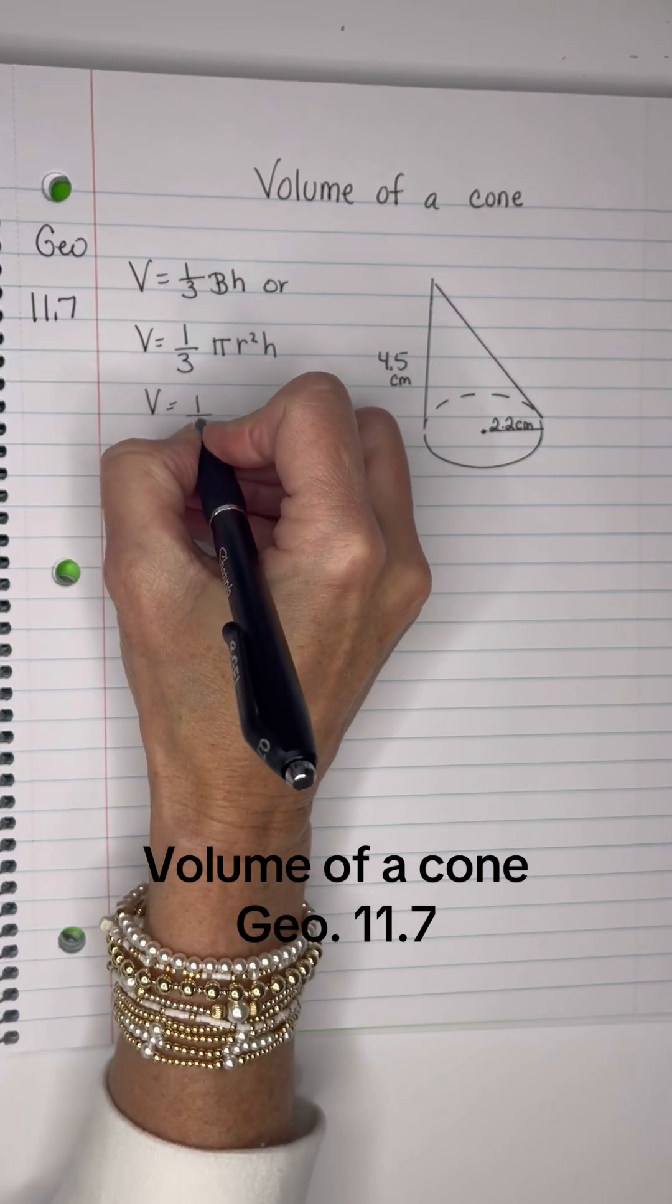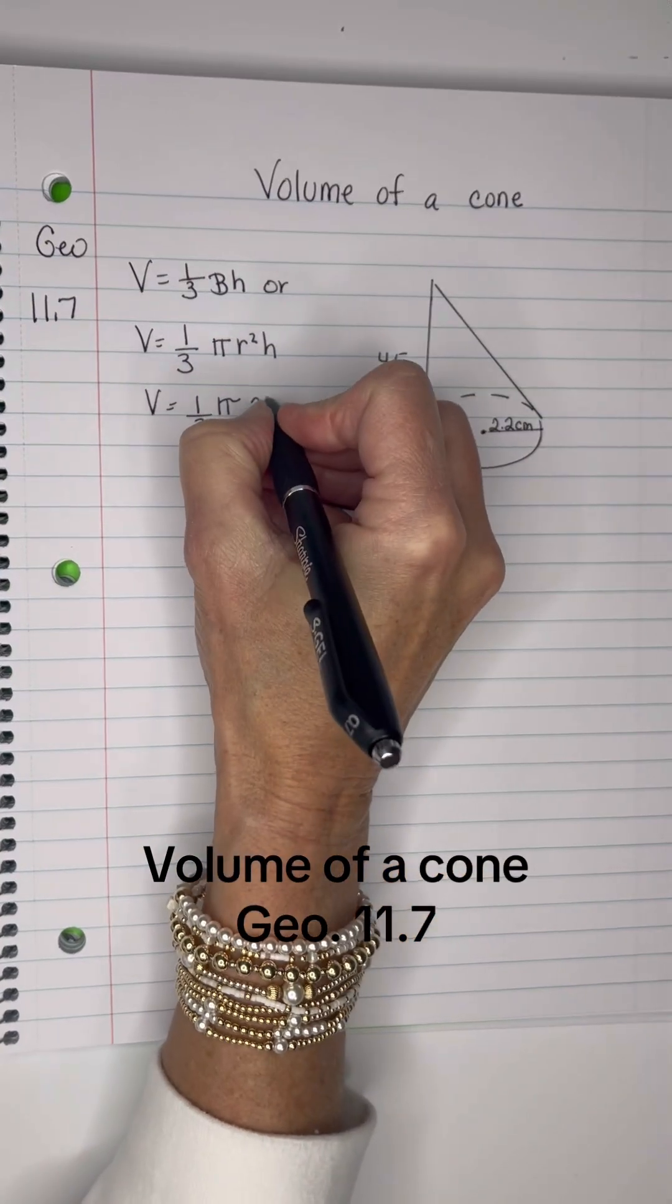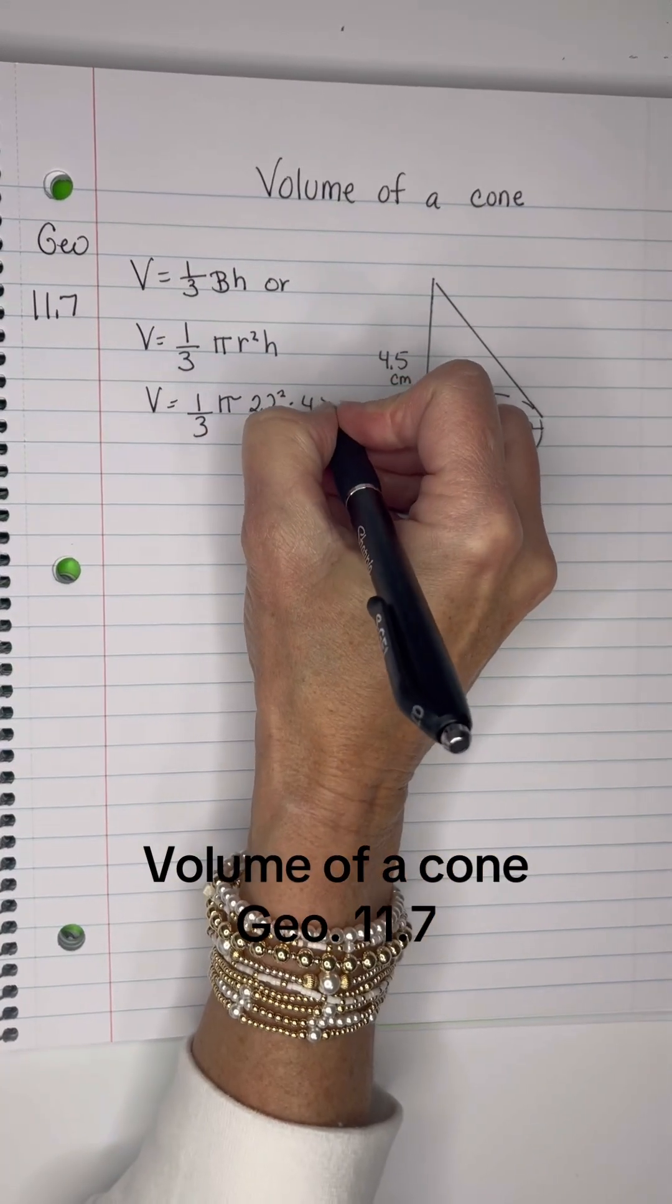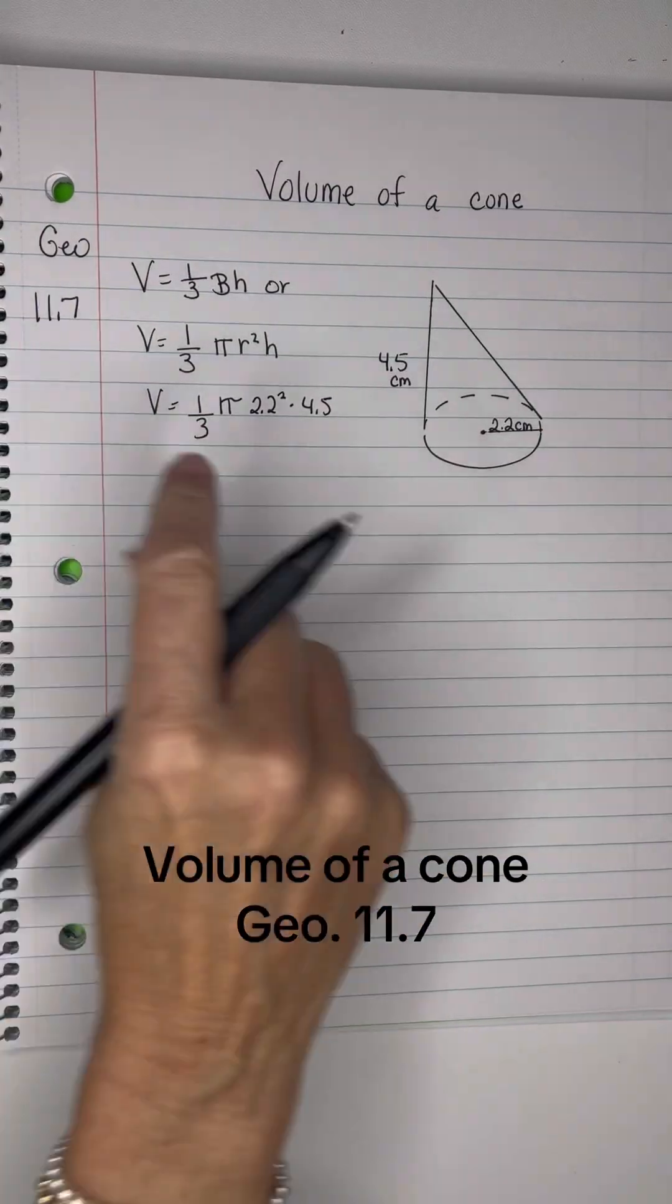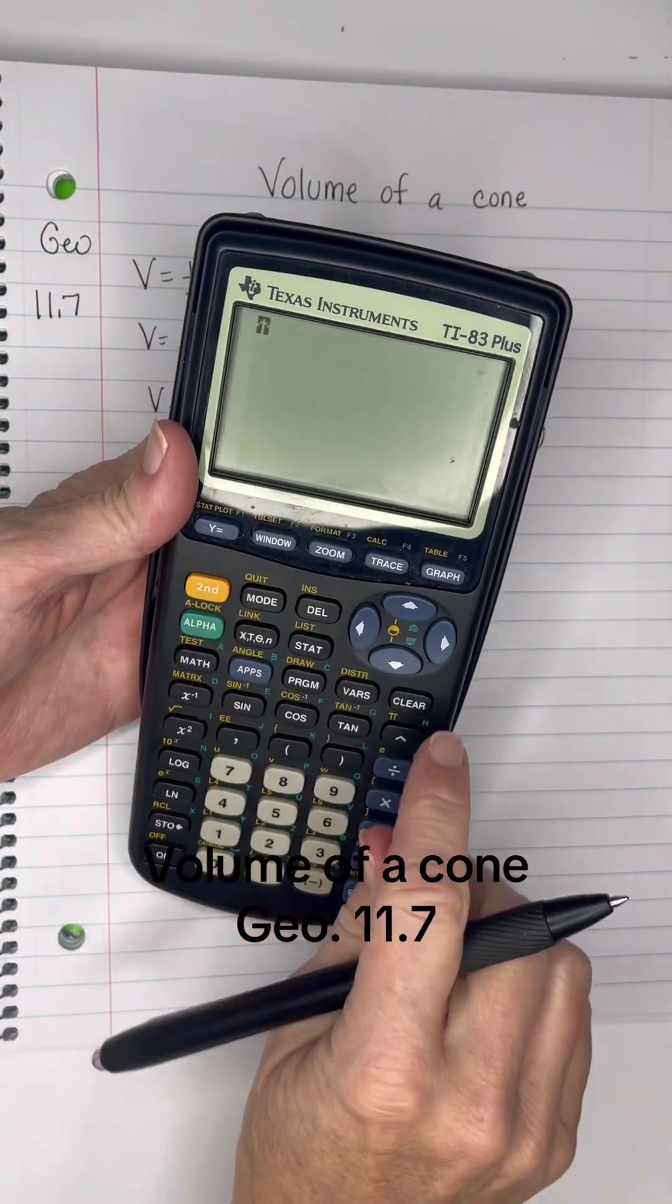So I've got 1/3 times π, the radius is 2.2 squared, and then the height is 4.5. Okay, putting all that into the calculator on the top and dividing by three—so that would be π...